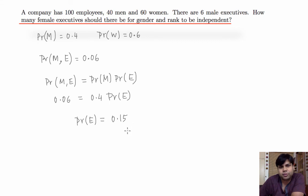Probability of female executives is equal to probability of executives minus probability of male executive, which is 0.09. So the total number of female executives are nine. Thank you.